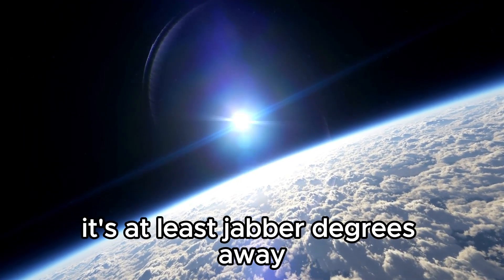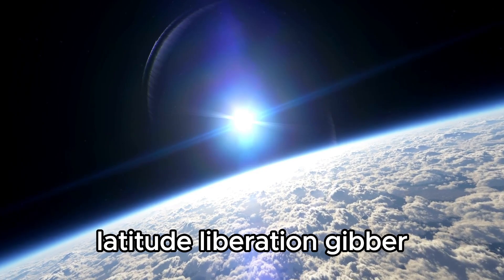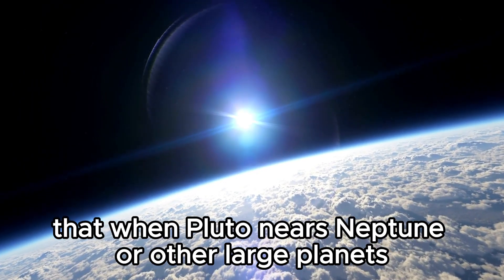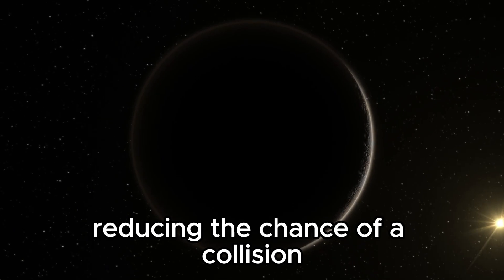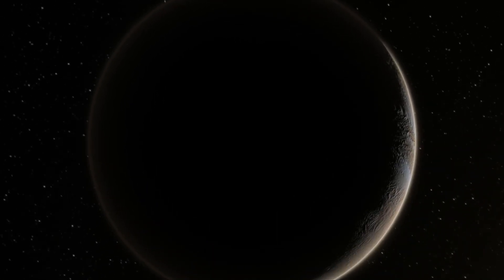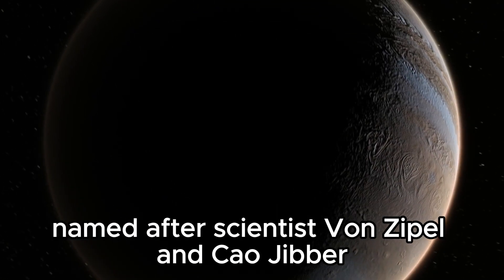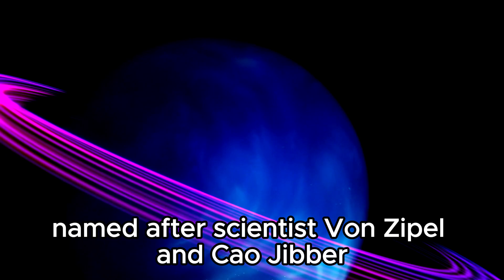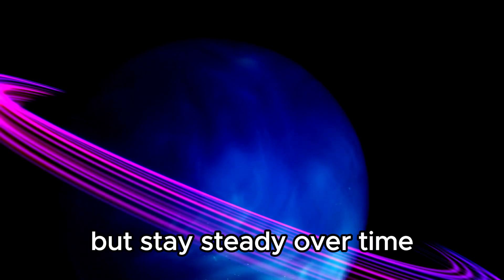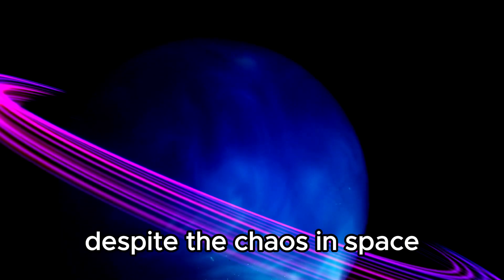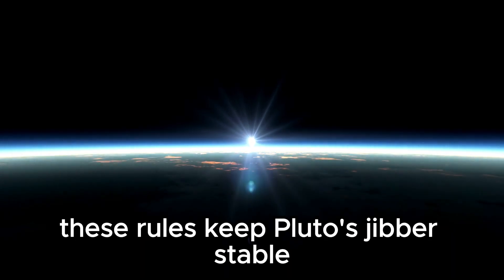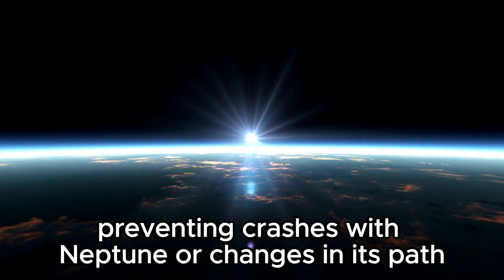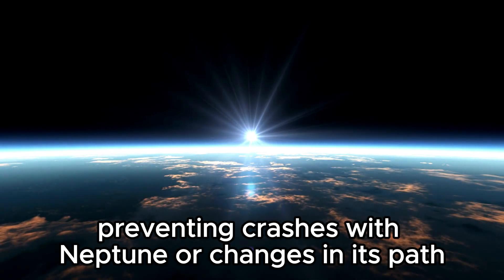It's at least 10 degrees away, keeping them from crashing. Latitude libration ensures that when Pluto nears Neptune or other large planets, it's well above their path, reducing the chance of a collision. The Kozai oscillation, named after scientists Kozai and Lidov, explains why Pluto's orbit seems strange, but stays steady over time. Despite the chaos in space, some underlying rules keep things in order. These rules keep Pluto's orbit stable, preventing crashes with Neptune or changes in its path.